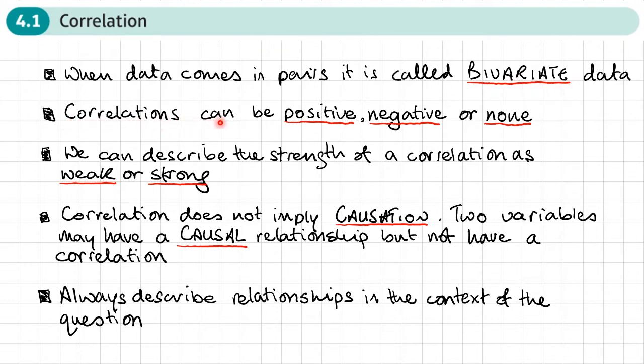We know that correlations can be positive, negative, or there may be no correlation. We can describe the strength of a correlation as being weak or strong. So we could have a strong positive correlation, a weak positive correlation, or a strong negative or weak negative correlation.